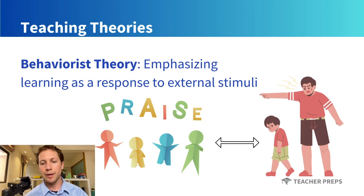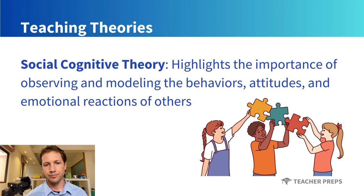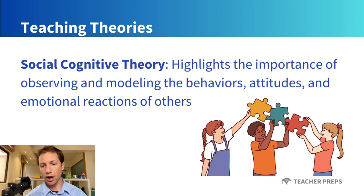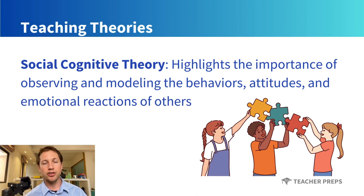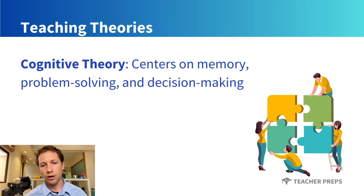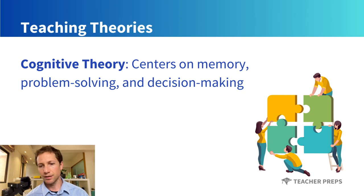The behaviorist theory can be remembered by the difference between praise and punishment. Moving on, social cognitive theory highlights the importance of observing and modeling the behaviors, attitudes, and emotional reactions of others, incorporating self-efficacy — an individual's belief in their capacity to act in ways necessary to reach specific goals. The cognitive theory includes memory, problem-solving, and decision-making, stressing the role of internal processes and prior knowledge.